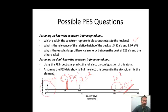Next one: Using PES spectrum, predict the full electron configuration of this atom. We just did that. Excellent. Assuming the PES data show that all the electrons present in an atom, identify the element. What you simply need to do is use the height of the peaks, or if the electrons are provided, look at that. We can see there's 2 plus 2 plus 6 plus 2. That would give us 12 electrons. And this is a neutral particle, so the electrons are equal to the number of protons, so there's 12 protons. And so the identity would, of course, be magnesium.